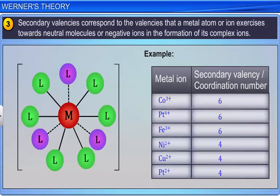Secondary valencies are non-ionizable. They are satisfied by neutral molecules or negative ions. The secondary valency is equal to the coordination number of the metal.